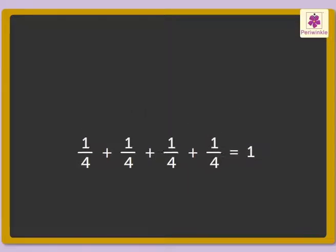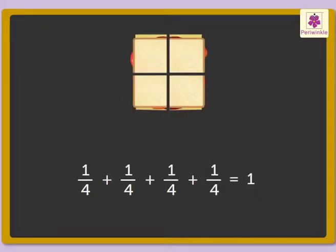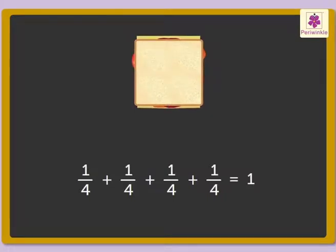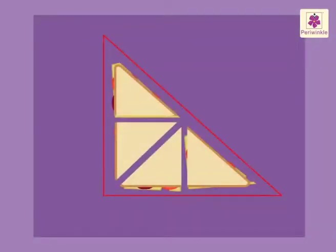One-Fourth plus One-Fourth plus One-Fourth plus One-Fourth is equal to one. That is, four One-Fourth parts added together gives us a whole object. Look at the triangular sandwich.